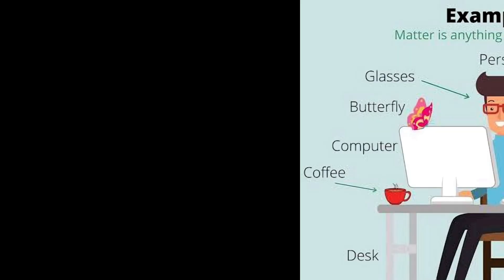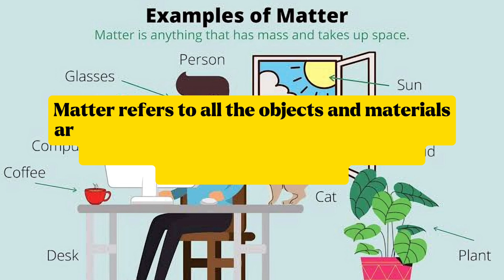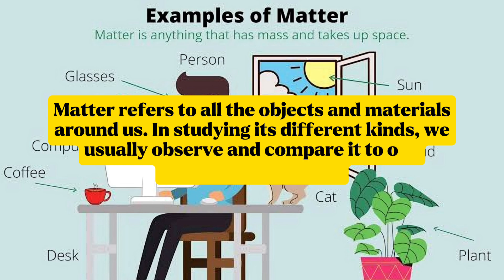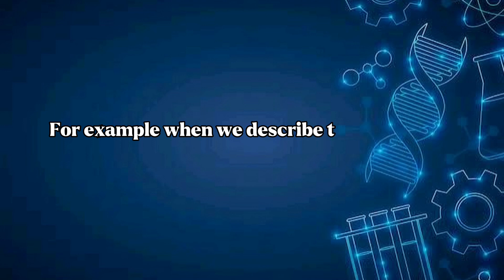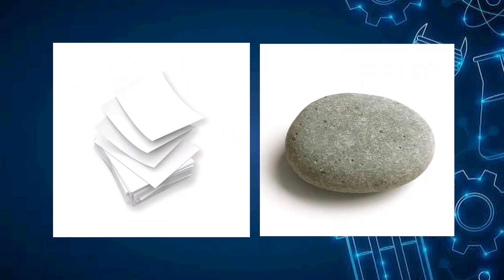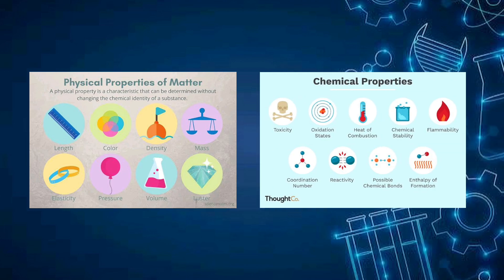Matter refers to all the objects and materials around us. In studying its different kinds, we usually observe and compare one material to another. For example, when we describe the difference between a paper and a rock, we usually look for characteristics that are not similar. These characteristics that make matter distinct from one another are called properties. The properties of matter can be classified as physical properties or chemical properties.